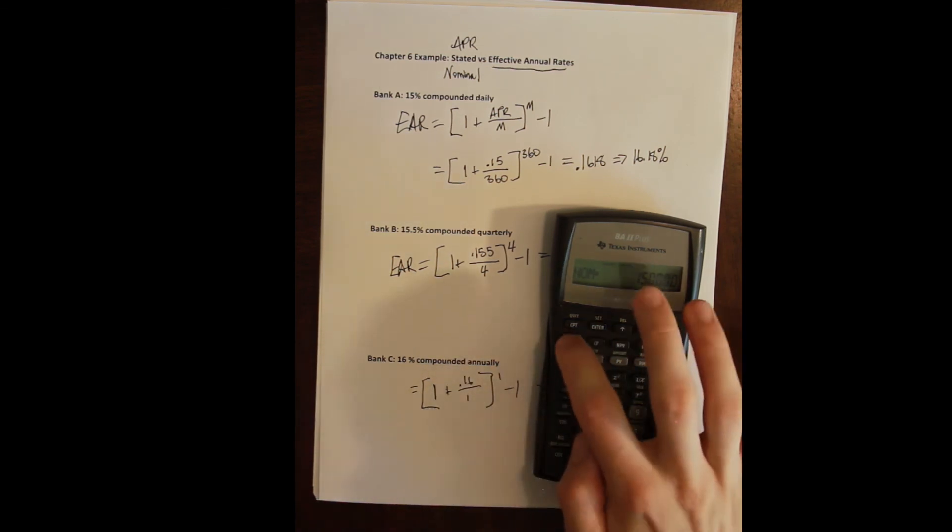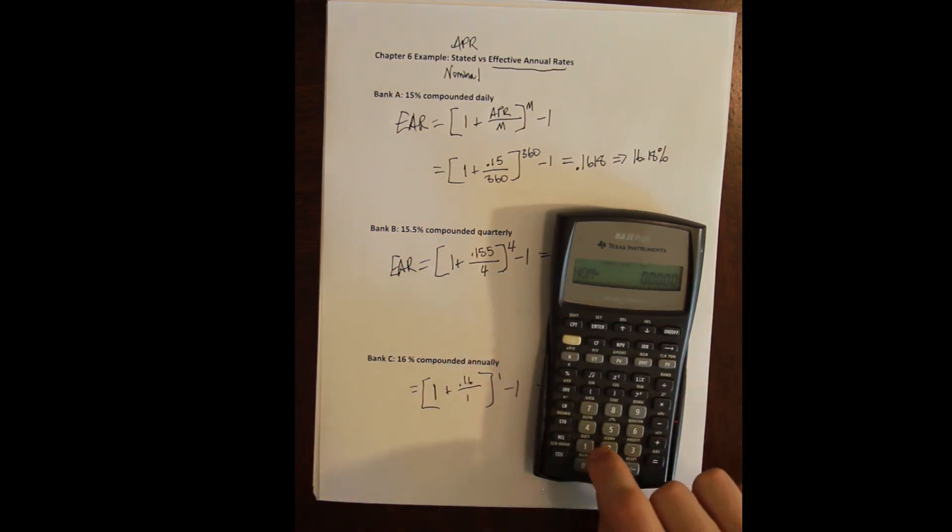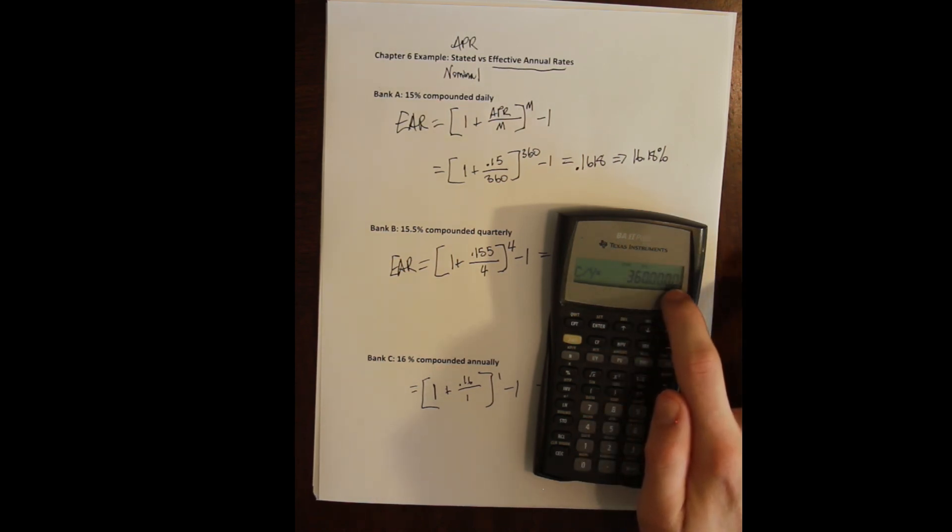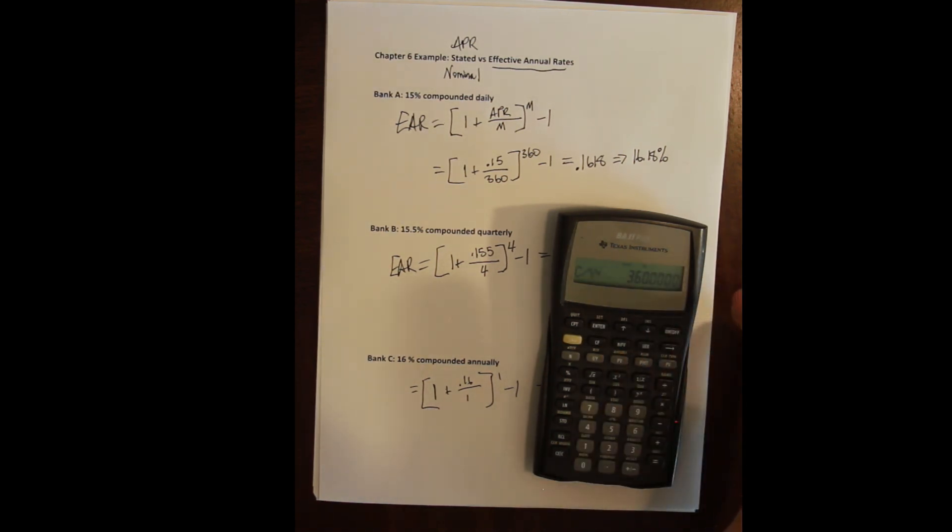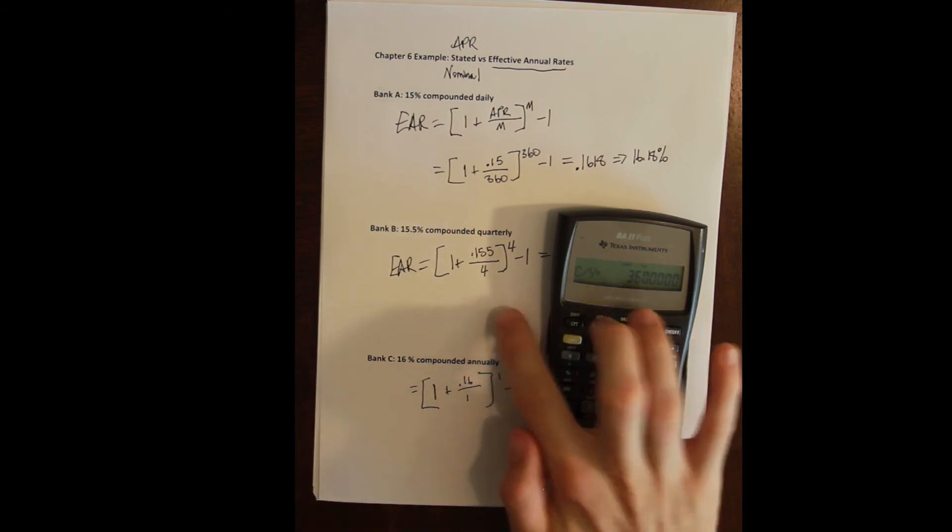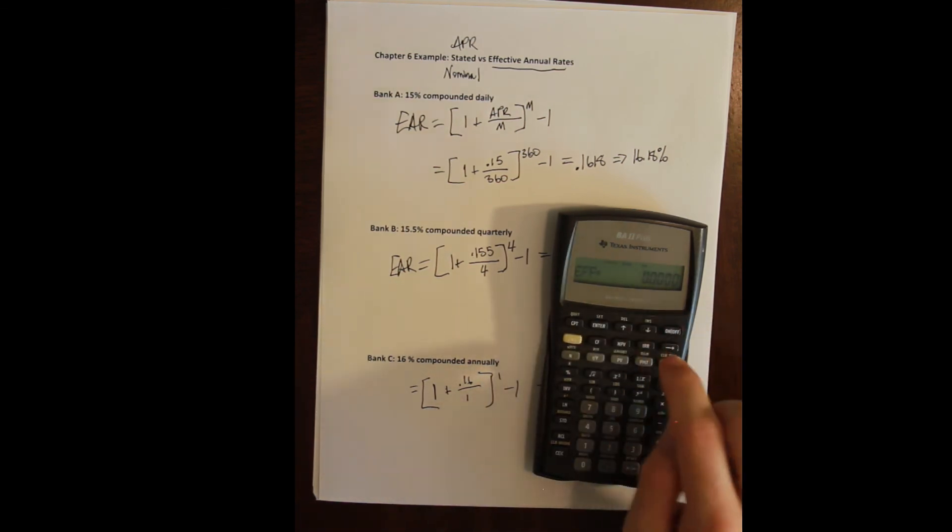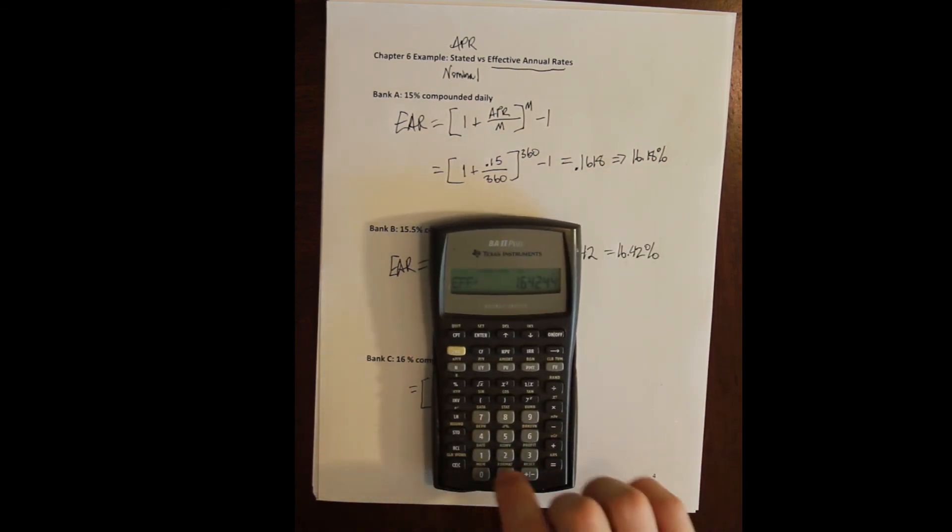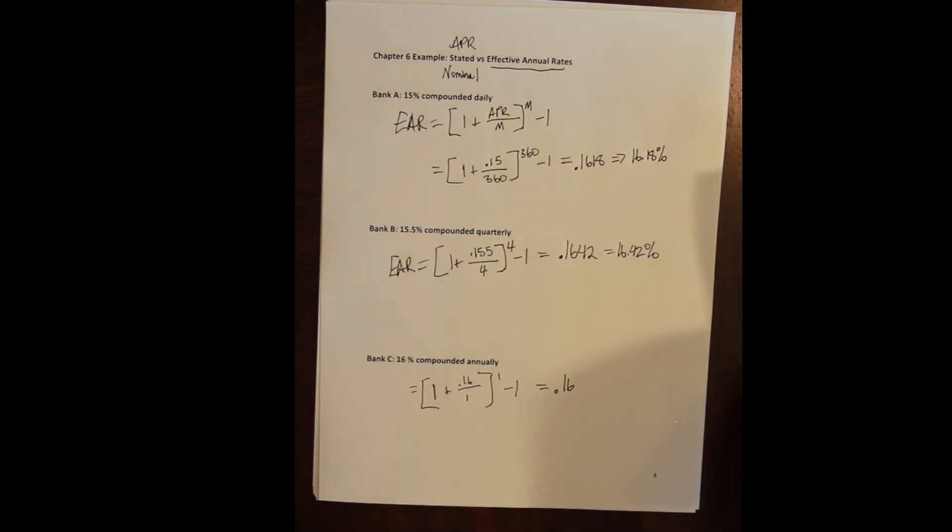We could do the second one. We could clear our work, do 15.5 and enter, have cash flows per year of four. By the way, cash flows per year for whatever reason, the calculator doesn't ever clear this, but just don't freak out if it doesn't clear. I have a quarterly rate here, so four and then enter. I overwrite it, my effective rate I compute and I get 16.42.